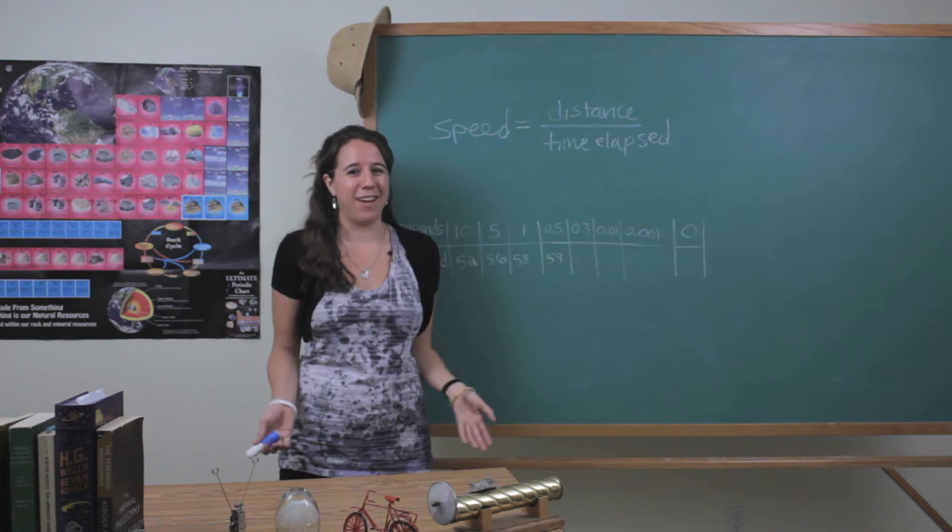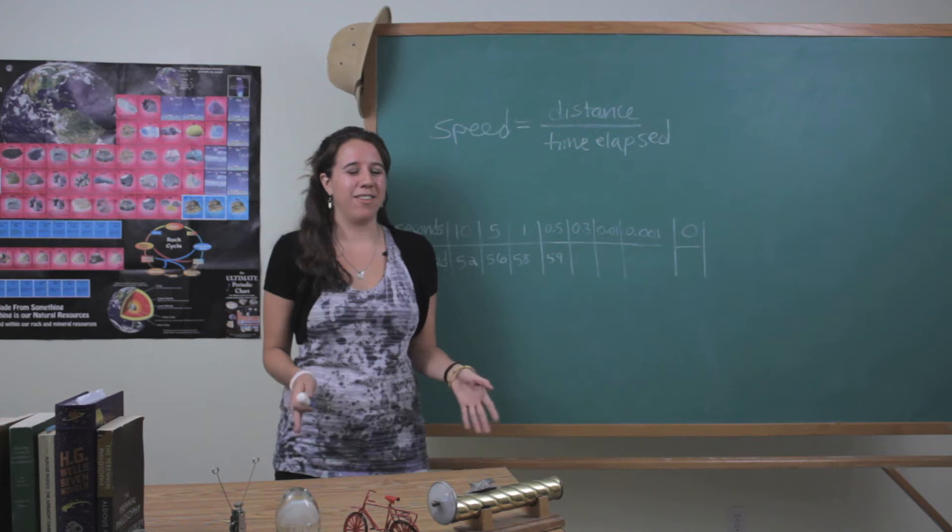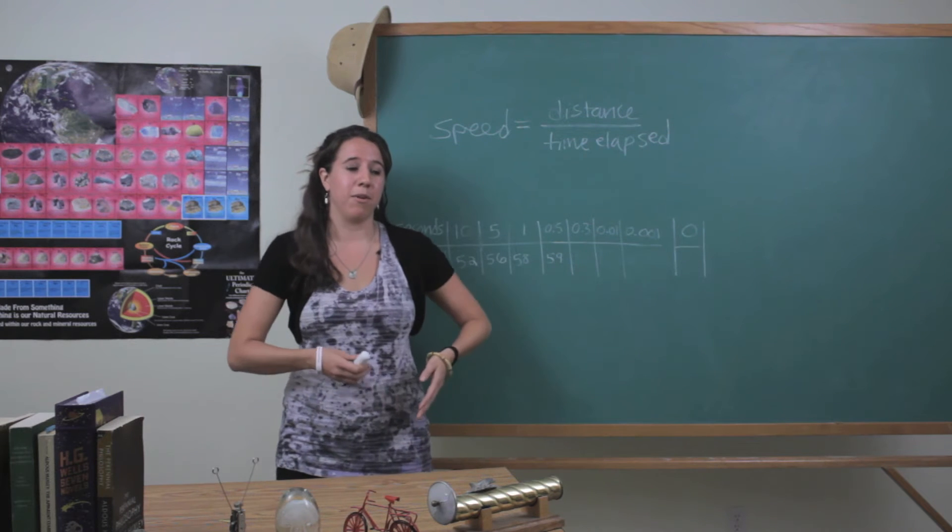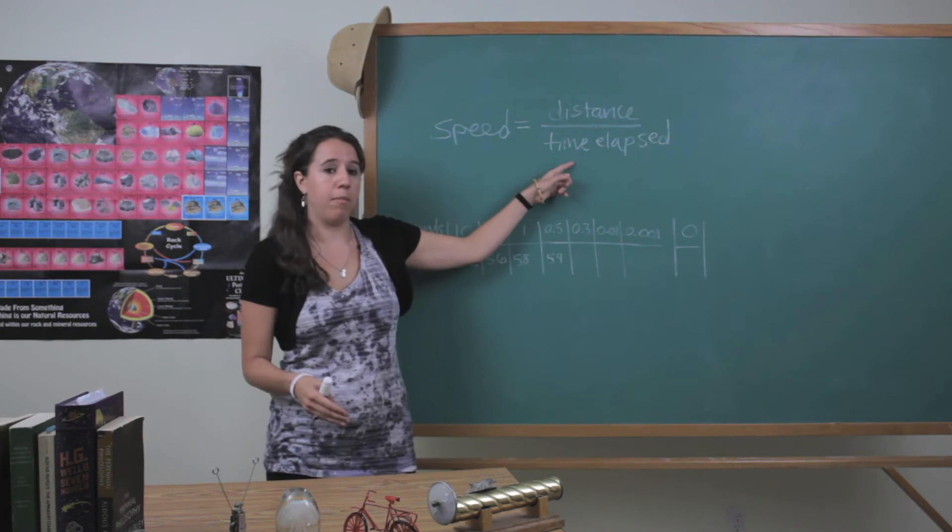And as you all know, you can't divide by zero because then the universe will explode. You don't want that to happen. So instead what we're going to do is we're going to kind of sneak up on that zero at the bottom of this equation.